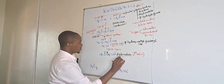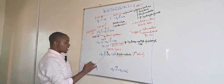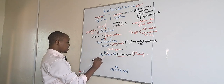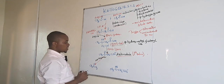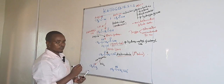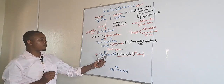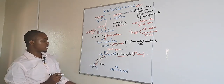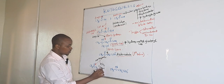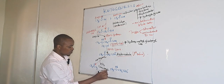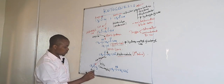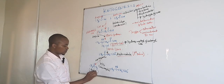Acetoacetate can be broken down by a non-enzymatic reaction involving decarboxylation — that is, removal of carbon dioxide. Through this non-enzymatic decarboxylation, acetoacetate is converted to acetone. Acetone is the second ketone body, and it is volatile.